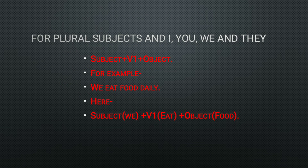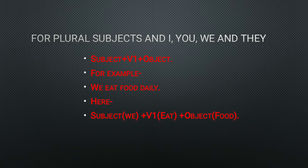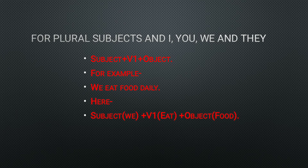For plural subjects — and also I, you, we, and they — you might think 'I' is not plural, but 'I' follows all the rules of plural subjects even though it is a singular subject. So for all plural subjects, the formula is: Subject + V1 + Object. For example, 'We eat food daily.' Here subject is 'we,' V1 is 'eat,' and object is 'food.' The sentence is: 'We eat food daily.'